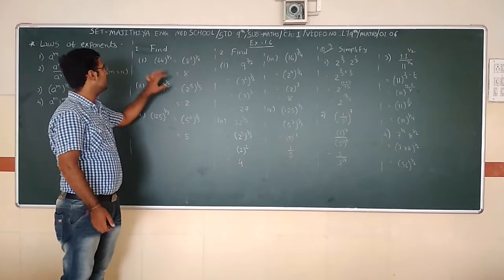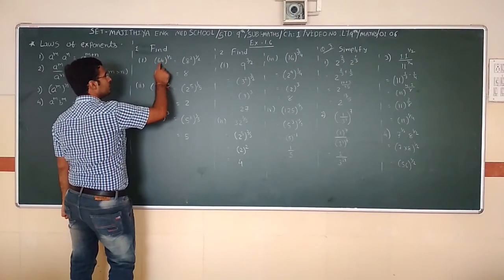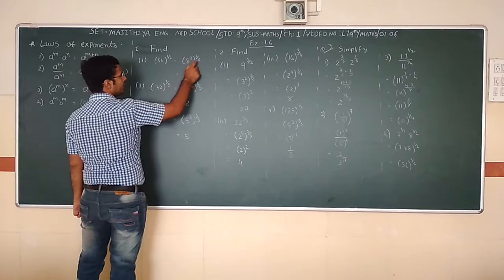Question number 1, part 5. First: 64^(1/2). We have to remove this 1/2. We know that 8 squared equals 64. So (8²)^(1/2), the 2 cancels, giving 8^1 = 8.